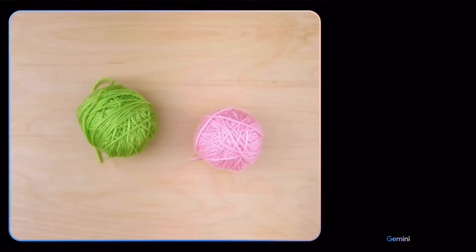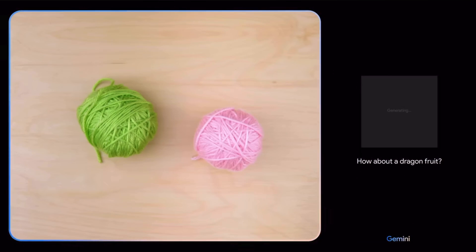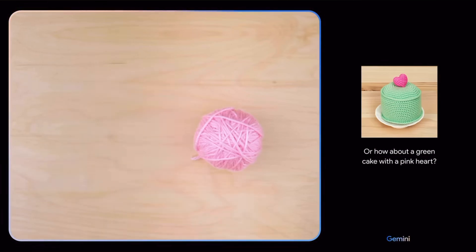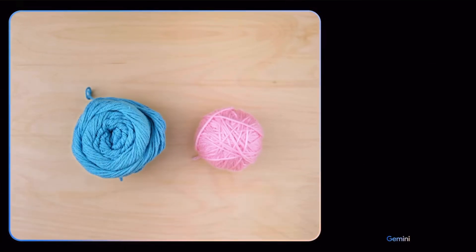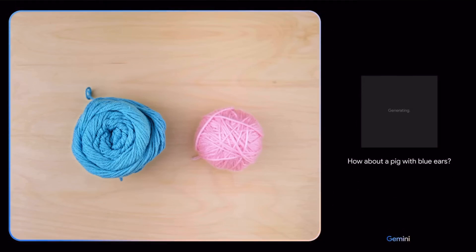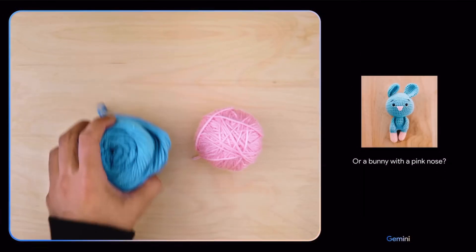Give me some ideas for what I could make with this. I see pink and green yarn. How about a dragon fruit? Or how about a green cake with a pink heart? Okay. How about these colors? And maybe show me some animals. Okay. Now I see blue and pink yarn. How about a pig with blue ears? Or an octopus? Or a bunny with a pink nose? I'll keep those in mind.